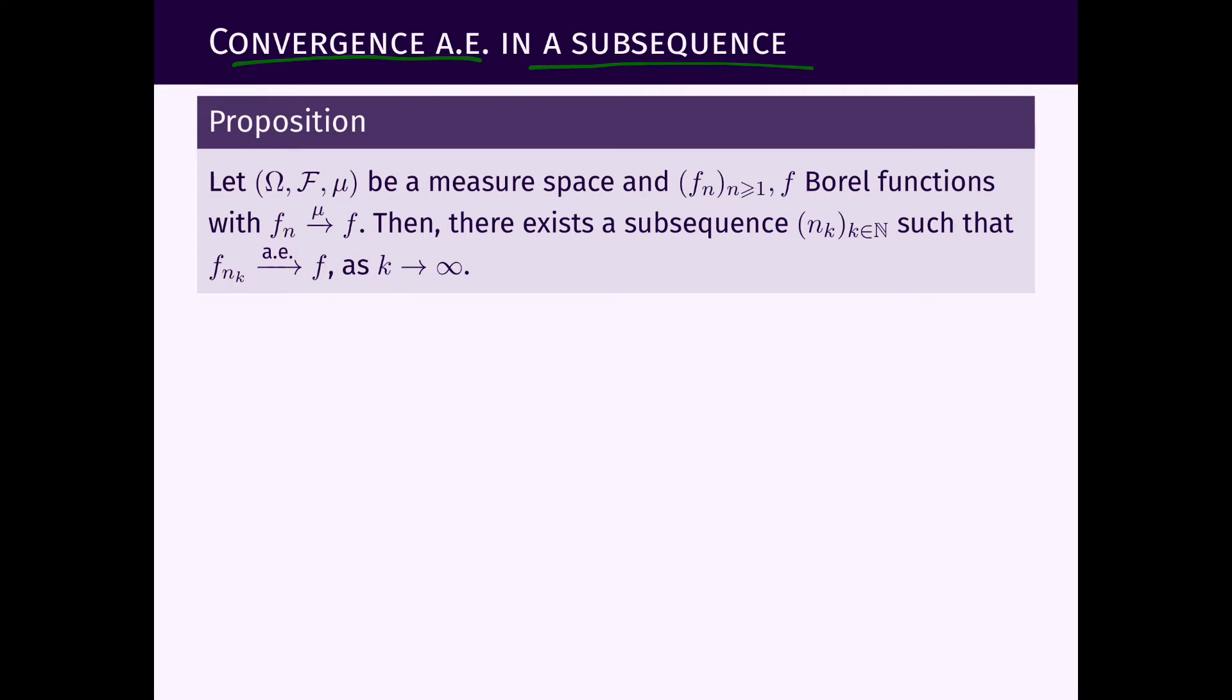So this proposition says we have seen examples before of sequences that converge in measure but not almost everywhere. And what the proposition says is if we have convergence in measure then there is a subsequence at which we converge almost everywhere.